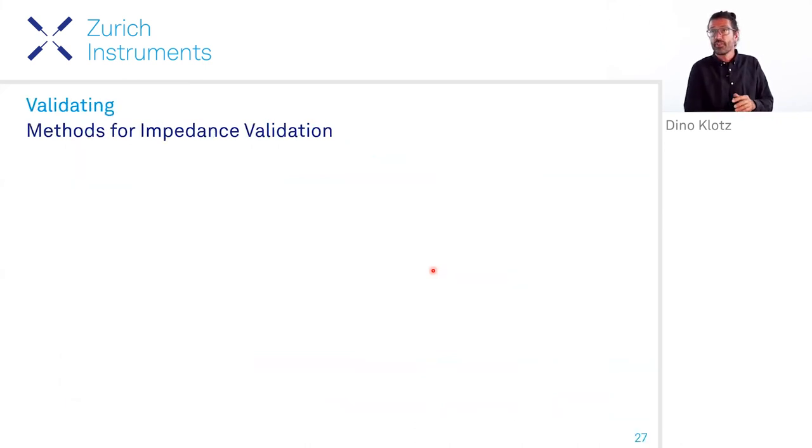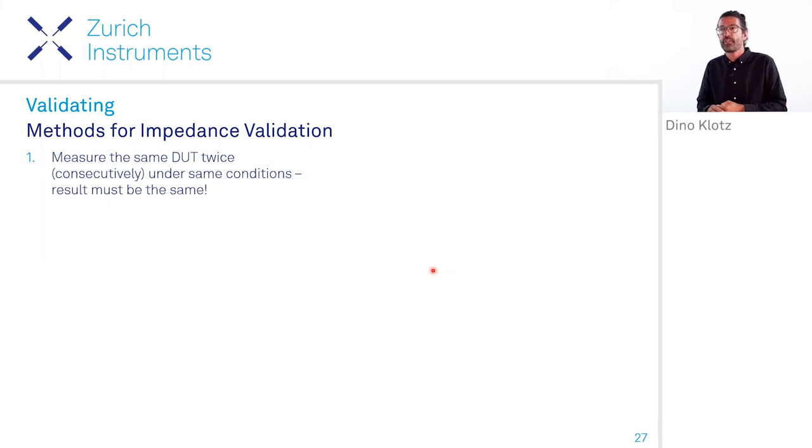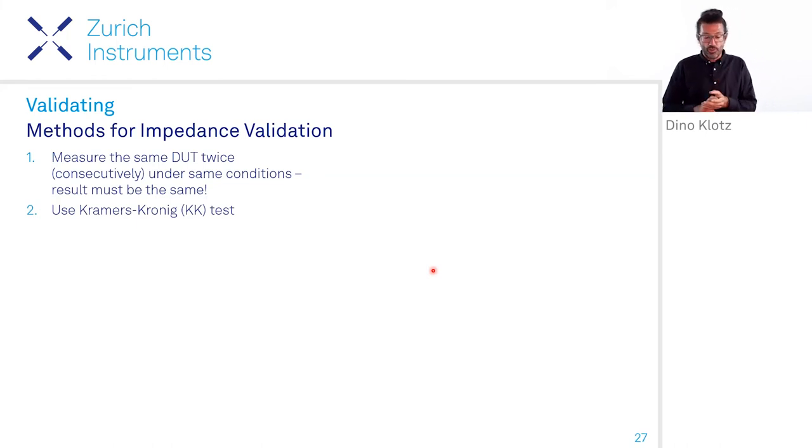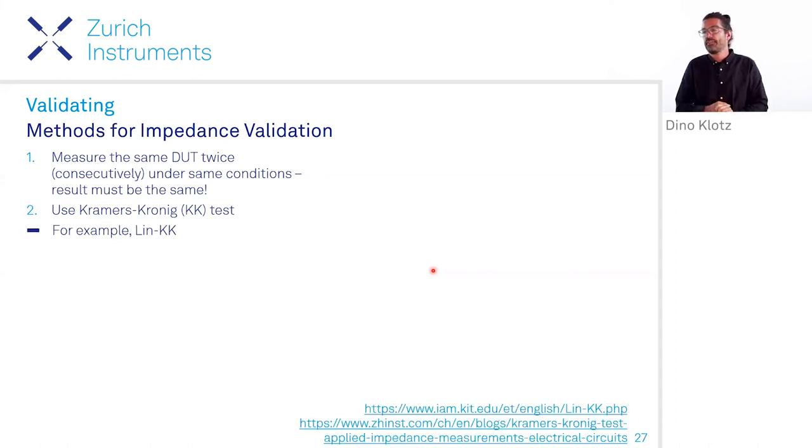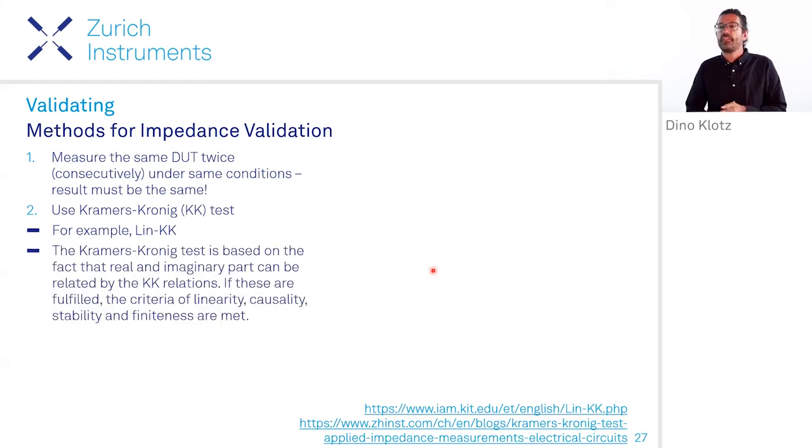One more very nice feature of impedance spectroscopy, electrochemical impedance spectroscopy, is that there are methods to validate your spectrum. And now I want to show you first the easiest way to validate. If you just measure your system or your DUT twice, one after the other, and they look the same, mostly it's a very good indication that your impedance is valid and that your sample is stable. You can also use a Kramers-Kronig test that's a bit more systematic. For example, there are free tools available, and there's also a blog on our company website. Basically, the Kramers-Kronig test is based on the fact that the real and the imaginary part can be related via the Kramers-Kronig relations, and if those relations are fulfilled, then the criteria of linearity, causality, stability, and finiteness are met. And that tells us that our impedance spectrum is valid.